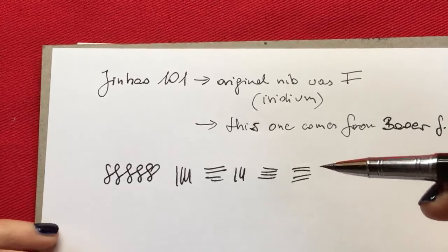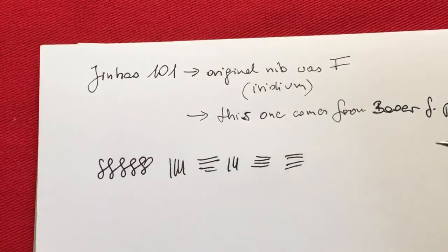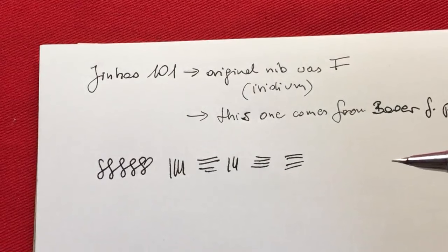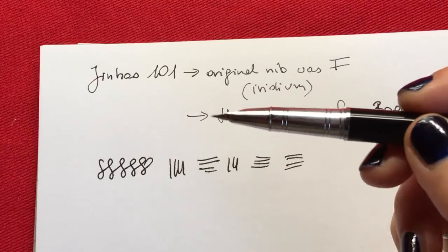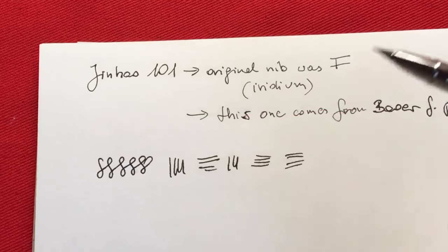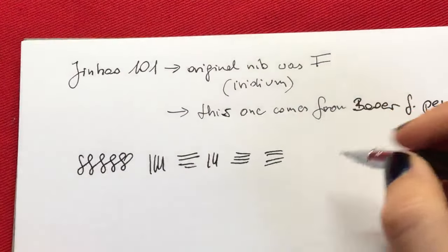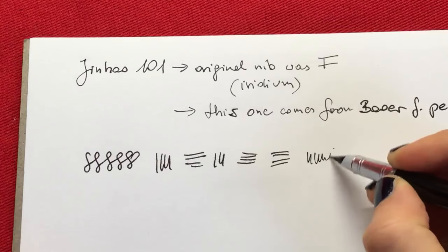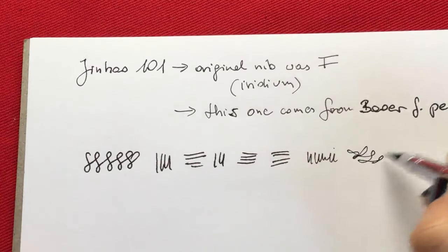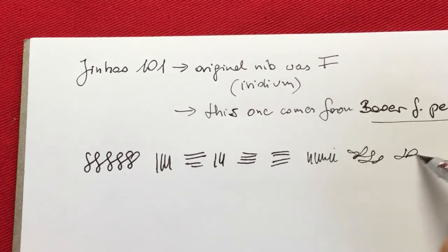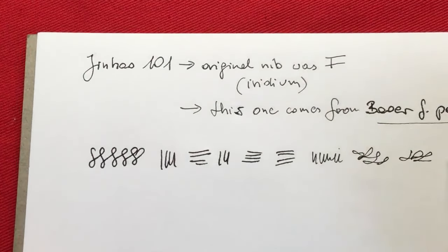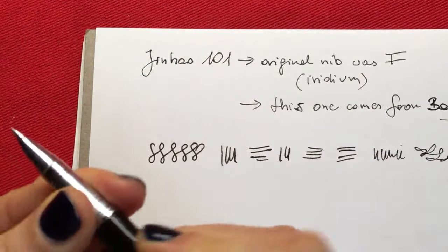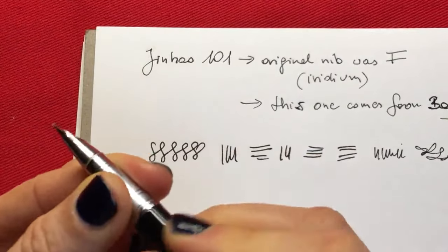I still have the nib from the Jinhao pen because I put it into another pen where I damaged the nib completely, and I'm going to review that pen a little bit later. Obviously the question is why haven't I saved that original nib in this pen for the review purposes, but well that's how I am. The reverse writing is also smooth when it comes to this Baoer EF nib in the Jinhao 101 pen.